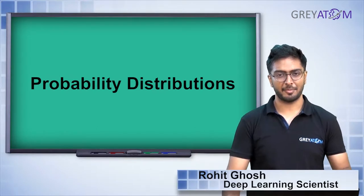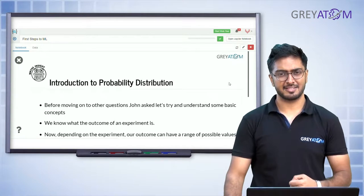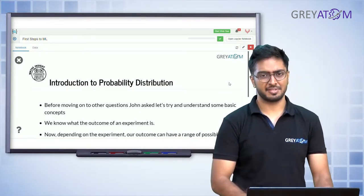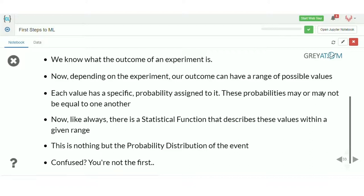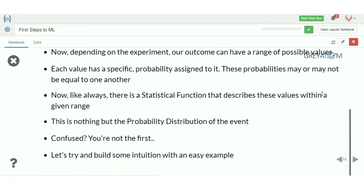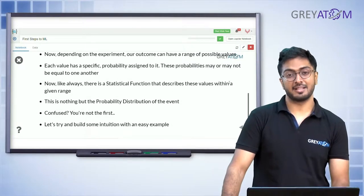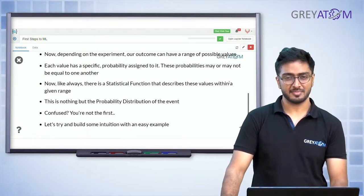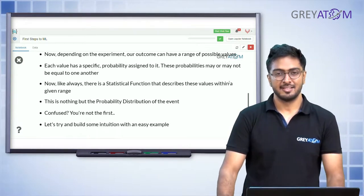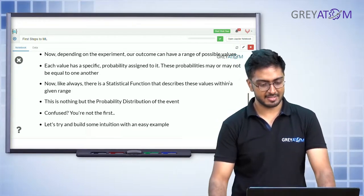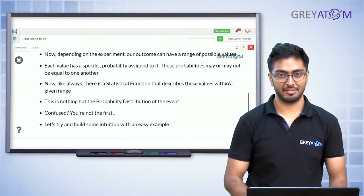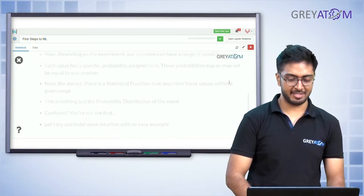We've talked enough about probability and conditional probability. Now let's get introduced to the concept of probability distribution, which naturally follows from what we've learned. Before moving on, let's understand some basics. We know the outcome of an experiment — in a coin flipping experiment the outcome could be heads or tails, and each value has a specific probability assigned to it. These probabilities may or may not be equal, for example in a biased coin it's more likely to come up heads. There's always a statistical function that describes these values within a given range.